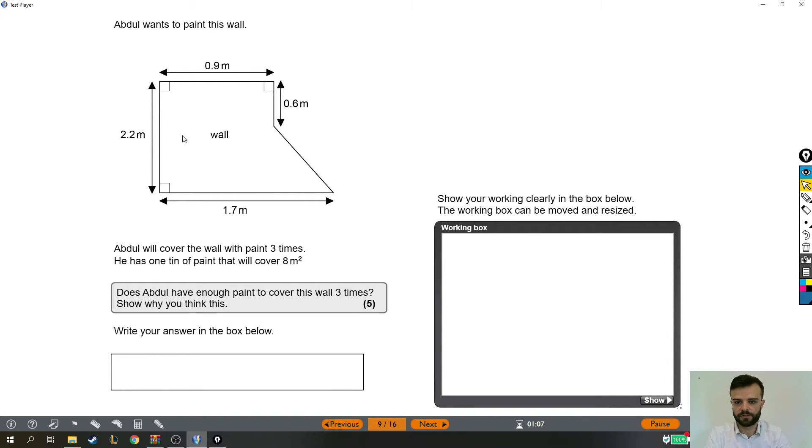Abdul wants to paint this wall, and it's obviously a weird shape. Abdul will cover the wall with paint three times, so don't forget that, we've got to paint it three times. He has one tin of paint that will cover eight metres squared. Does he have enough paint to cover the wall three times? Show why you think this.